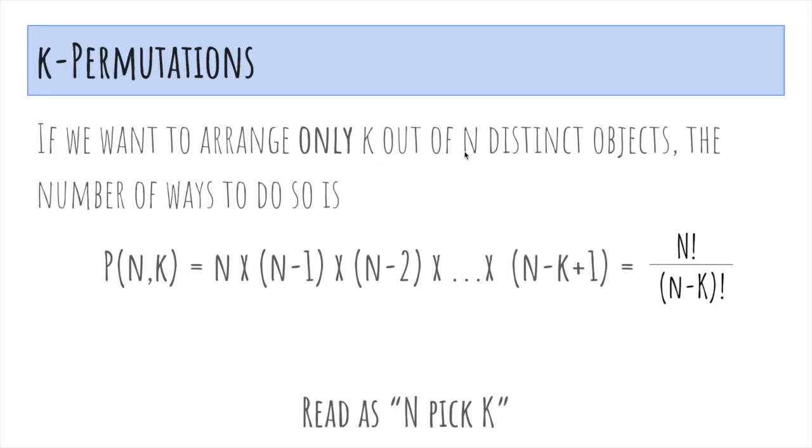So if we wanted to arrange only k out of n distinct objects, the number of ways to do so is called n pic k written like this, and it's n times all the way down to n minus k plus 1, and it's written as this for simplification.